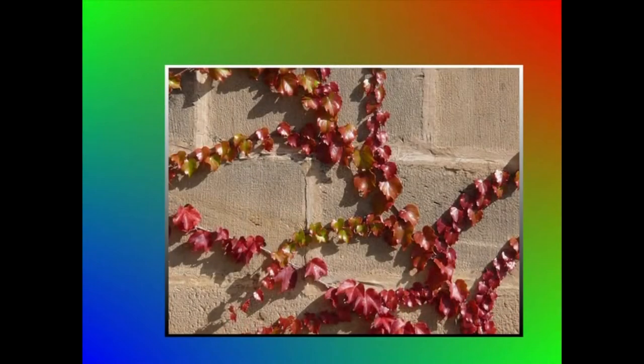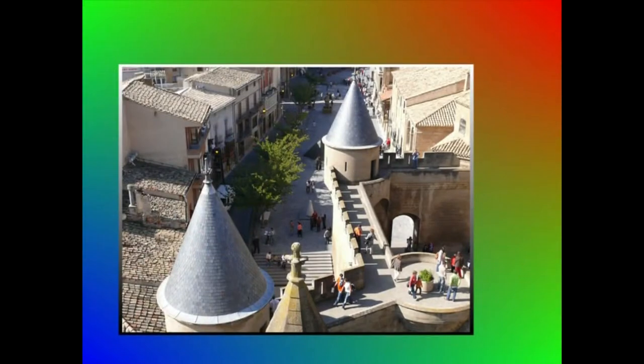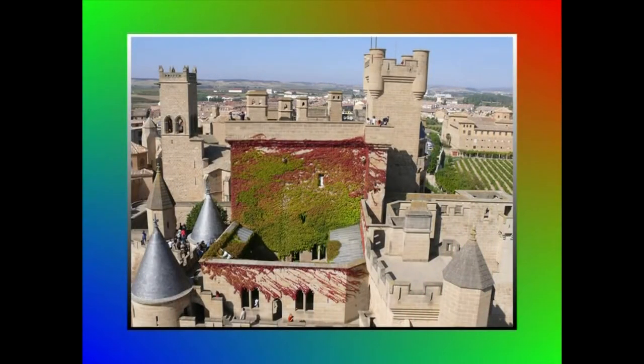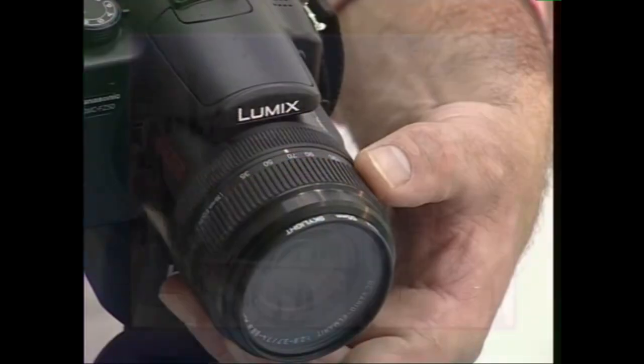Sani amasei araua esposizio zuzenak kalkulatzeko orduan abia puntu gisa erabiltzen den araua da. Argazki laritzaren hastapenetatik datorren kontua denarren, gaur egun ere indarrean dago. Sani arauak zera dio: ganorazko argazki bat lortzeko, sentsorera iristen den argi kantitateak beti berdina izan behar du.